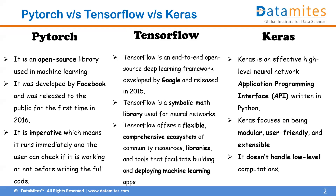Keras is an effective high-level neural network API — an application programming interface — written in Python. Every bit of the Keras library is written in Python, and it is an API that runs on top of other frameworks. PyTorch was developed by Facebook, now called Meta, and was initially launched in 2016.